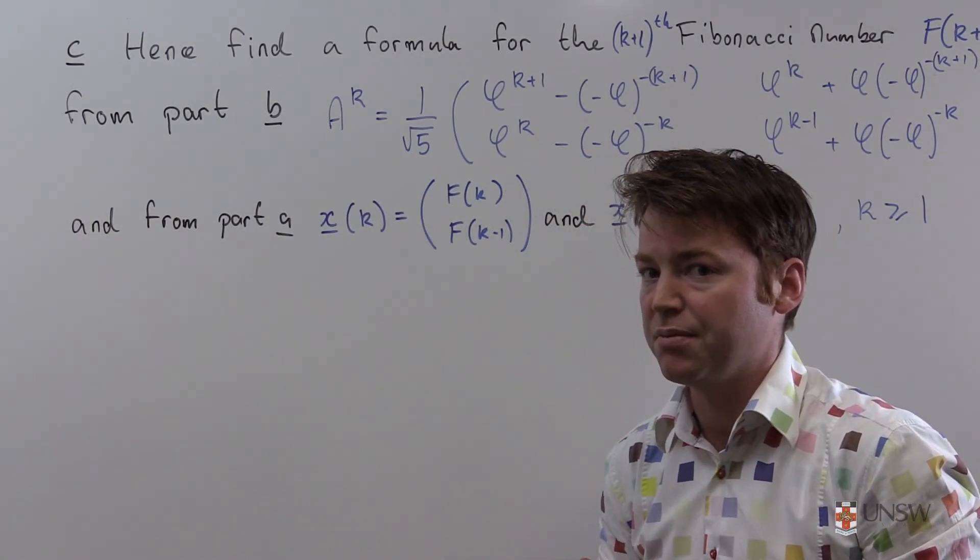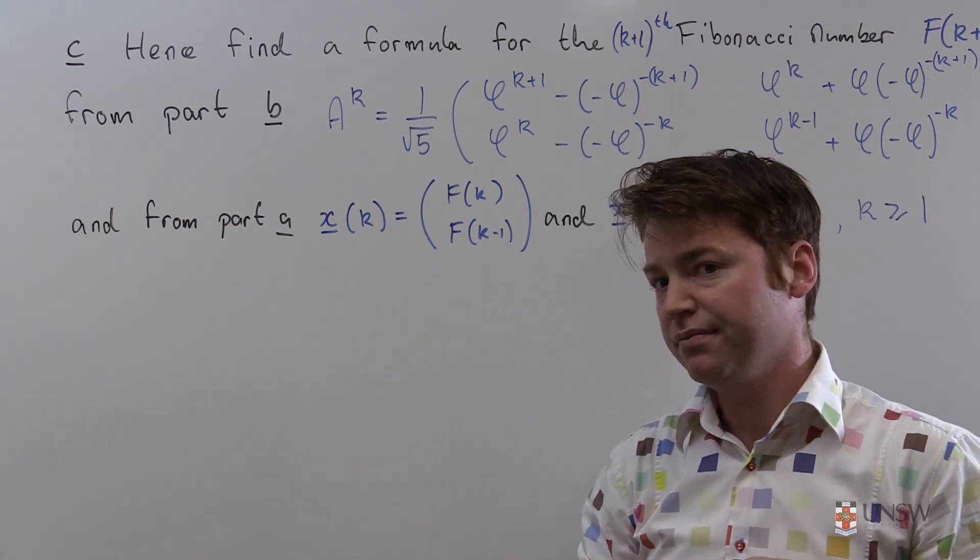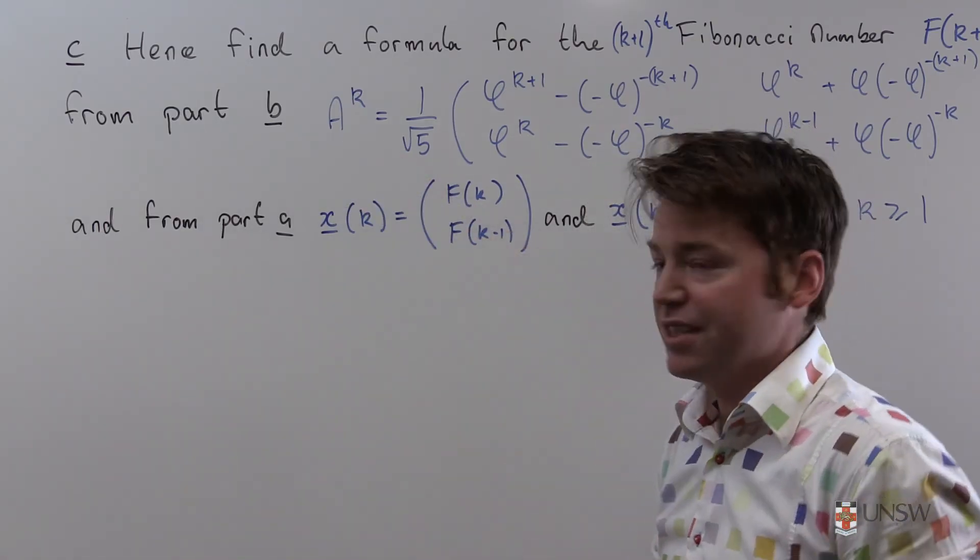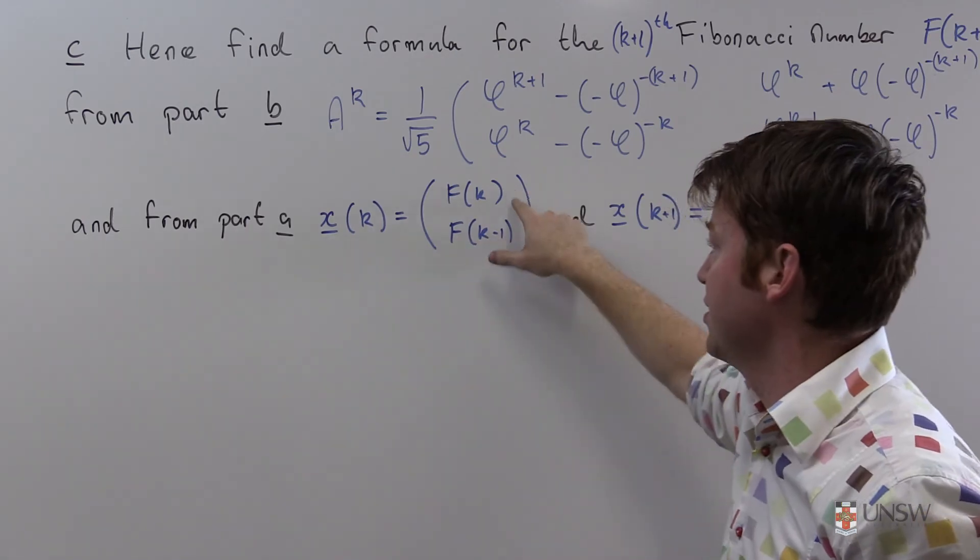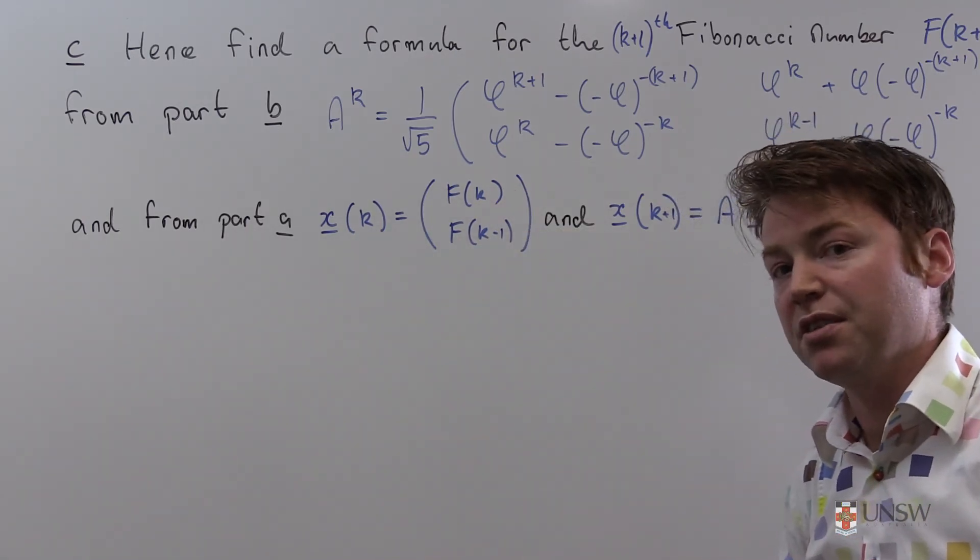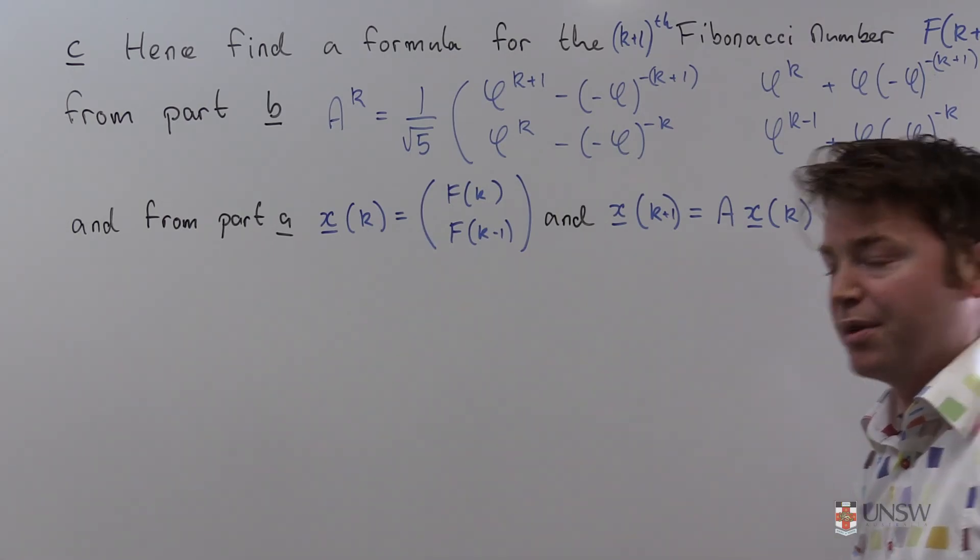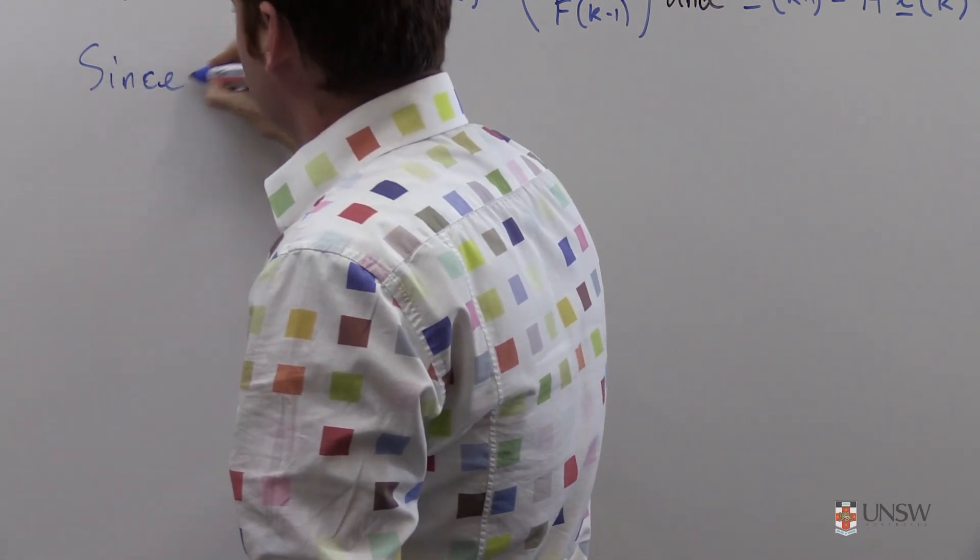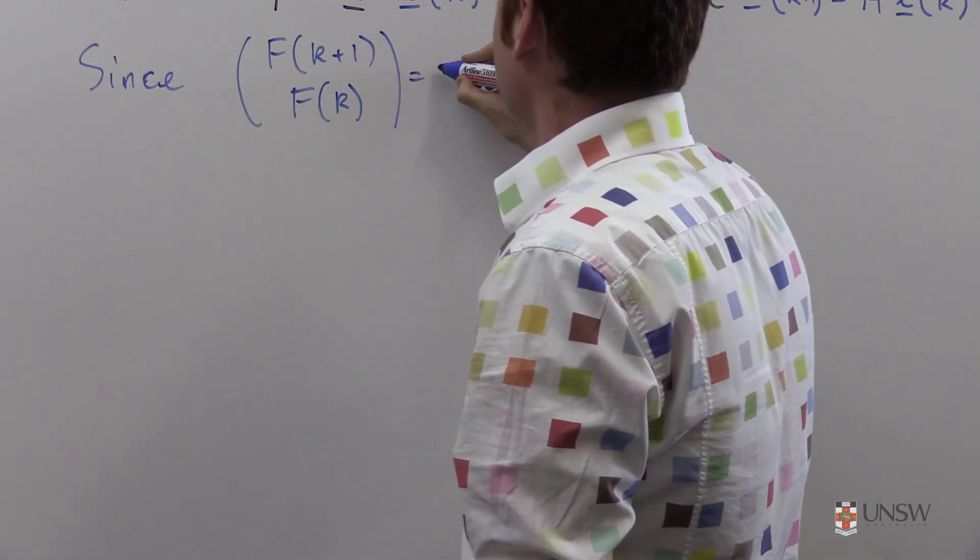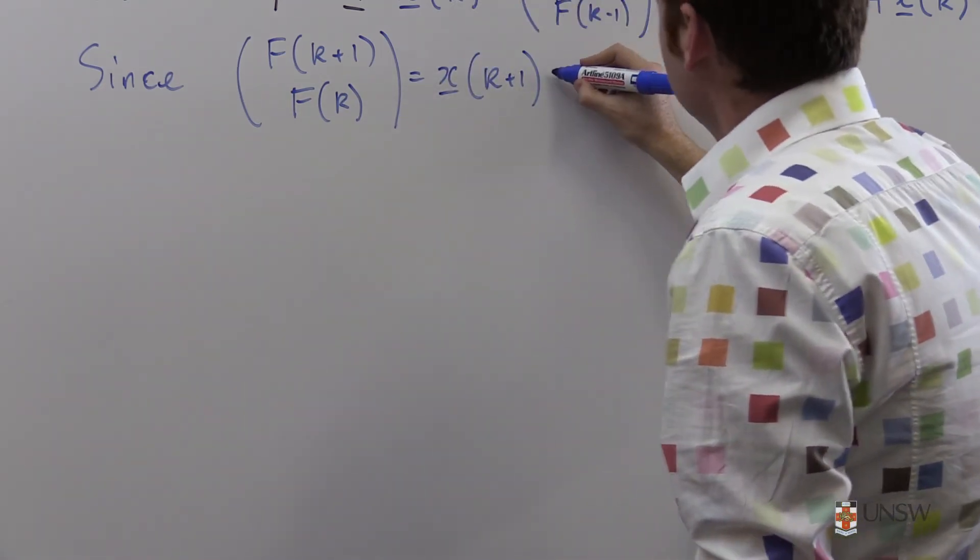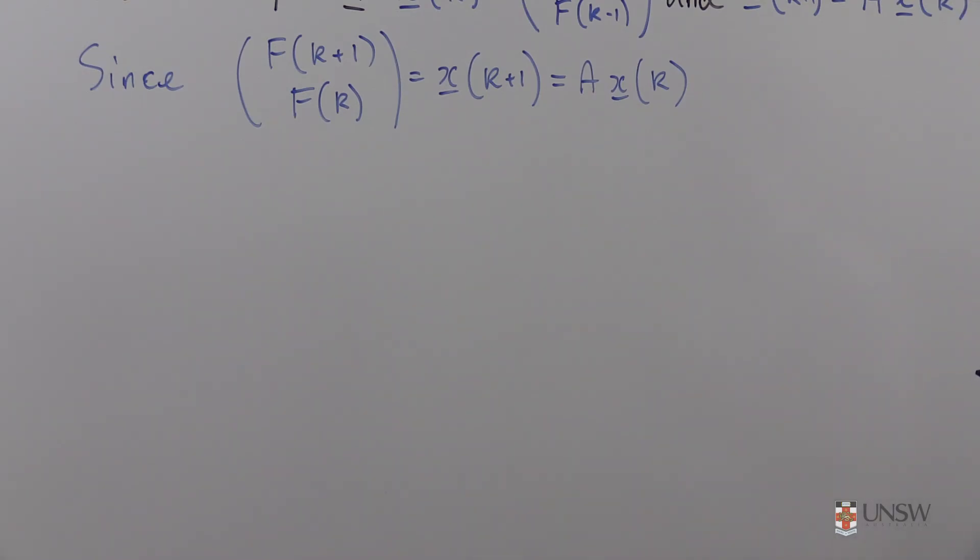In part c the purpose of this question becomes clear. We're asked to find a formula for the (k+1)th Fibonacci number. The pieces of the puzzle are in hand. We have the matrix A^k, which is this beastly matrix right here. And recall from part a that we said x_k, the kth vector is the kth and (k-1)th elements of the Fibonacci sequence. And they had this linear relationship. This allows us to find the (k+1)th Fibonacci number. So since the (k+1)th Fibonacci number, and as well as the kth for that matter, is just equal to x_(k+1), which by my recurrence relation is equal to Ax_k, assuming k is of course greater than or equal to 1.